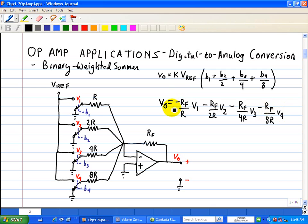Now, we see that RF over R is in common, so we can factor that out. So we have VO equal to negative RF divided by R. And now we have V1 plus V2 divided by 2, plus V3 divided by 4, plus V4 divided by 8. And notice how we weighted the inputs.